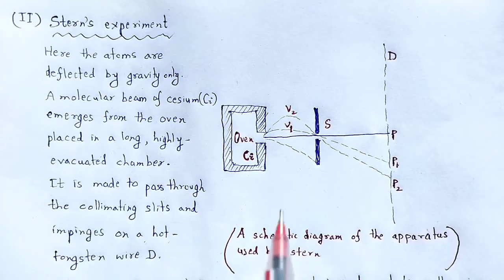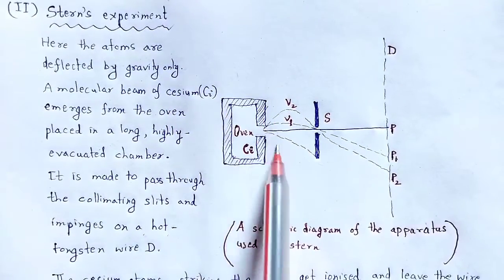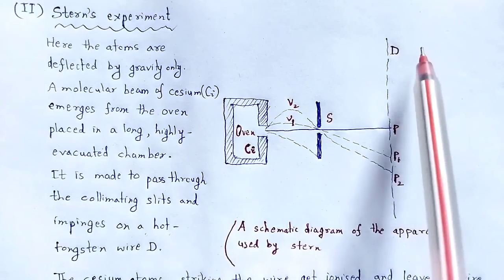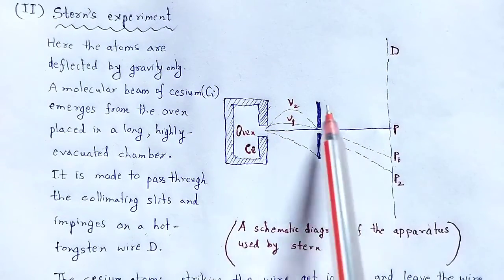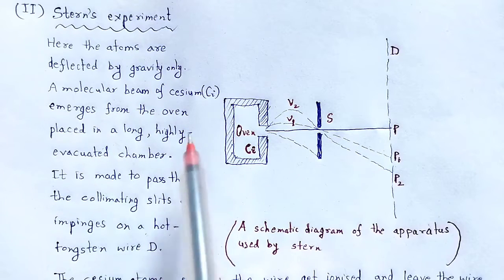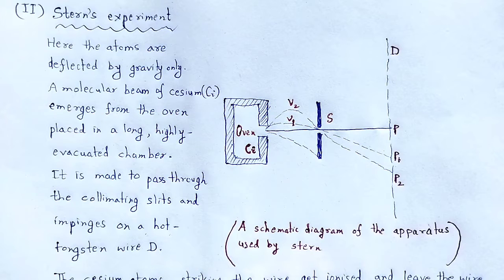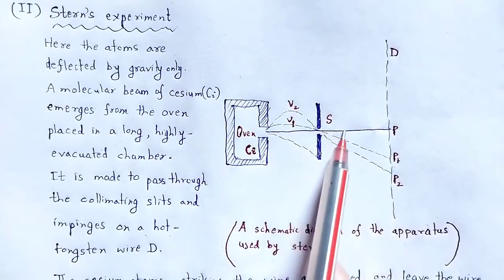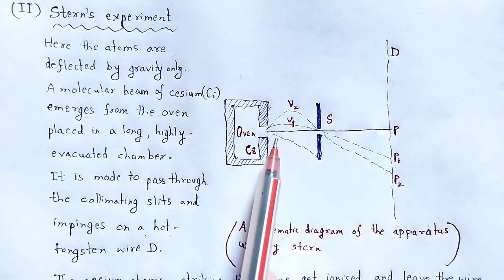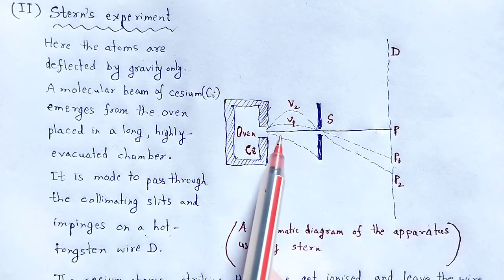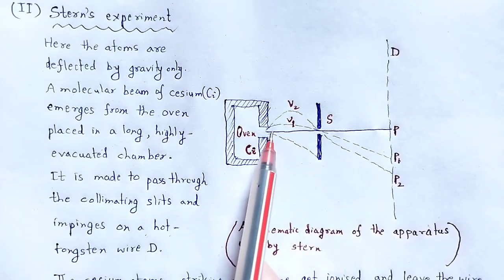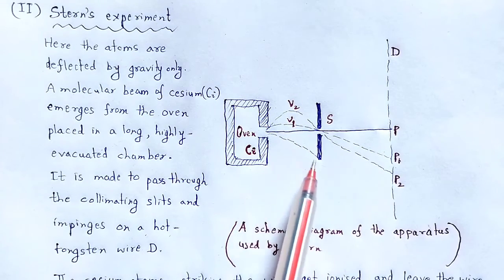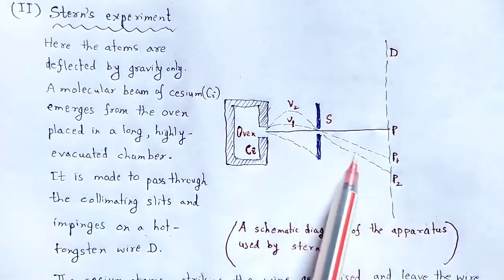In Stern's experiment, an oven with cesium atoms is used along with a collimating slit S and a hot tungsten wire D. The atoms are deflected by gravity only. Under the effect of gravity, the horizontal motion of the atoms is affected and the path changes to parabolic.